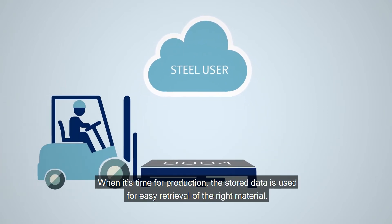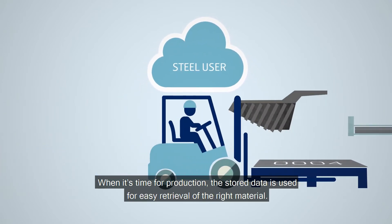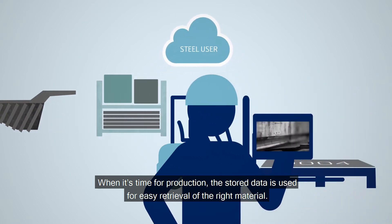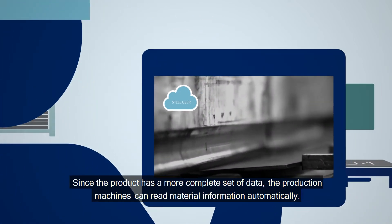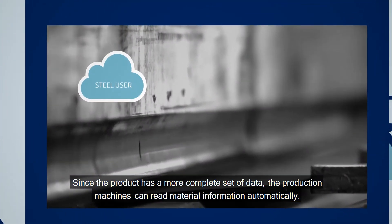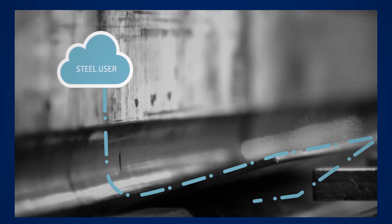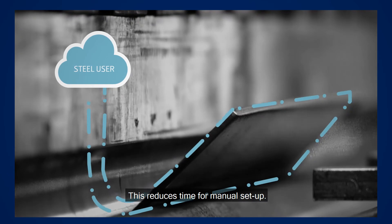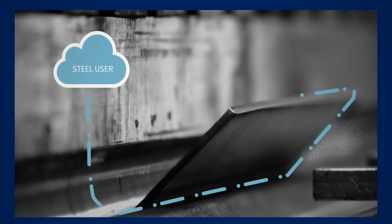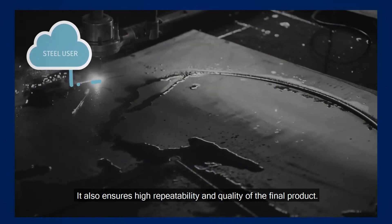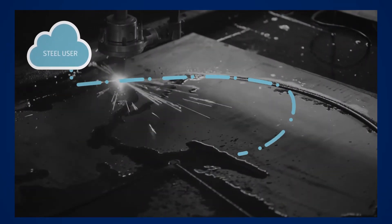When it's time for production, the stored data is used for easy retrieval of the right material. Since the product has a more complete set of data, the production machines can read material information automatically. This reduces time for manual setup. It also ensures high repeatability and quality of the final product.